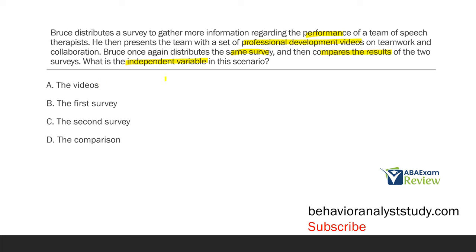What was added? The videos. Bruce gives the survey, then introduces the videos, then sees how the videos change behavior. He's looking for the effect of the independent variable on the dependent variable. What about B, the first survey, or C, the second survey? If anything, C would be our dependent variable — we're looking at how did the behavior change. But it's not our independent variable; we're measuring using the survey. The comparison would more likely be the dependent variable. So the independent variable is the video that was introduced. What is the IV in this scenario? A, the videos.